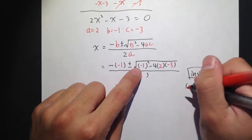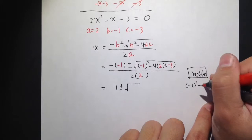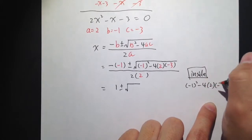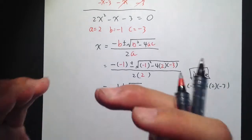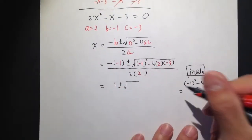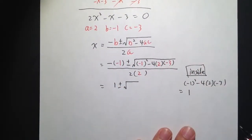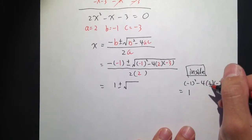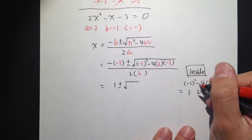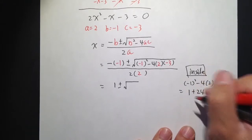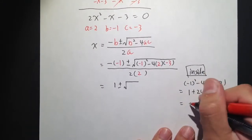Inside, for the inside, it will be negative 1 squared minus 4 times 2 times negative 3, like this. Negative 1 squared, that means negative 1 times negative 1, it's positive 1. 4 times 2 is 8, 8 times 3 is 24. But then negative times negative is positive, become plus, and we have 25.